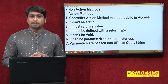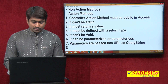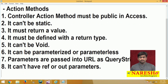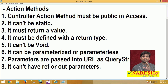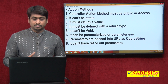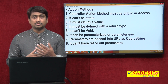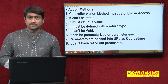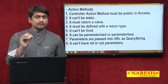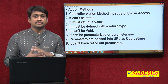A controller action method can be parameterized or parameterless, but importantly it cannot have reference or out parameters. It can have any type of parameters, but specifically not reference and out parameters. The purpose of reference and out parameters is to return values through them even in a void method, but since controller action methods cannot be void, they cannot have reference and out parameters.